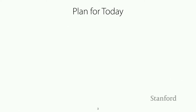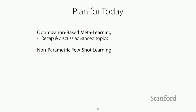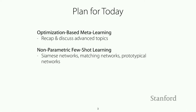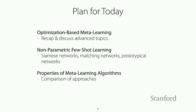So the plan for today: first we'll cover optimization-based meta-learning, basically recap what we covered last week very briefly and then discuss some more advanced topics. Then we'll cover non-parametric few-shot learning — this will probably be the bulk of the lecture — including things like Siamese networks, matching networks, and prototypical networks, as well as some other hybrid approaches. And lastly, we'll be covering properties of meta-learning algorithms and how we can think about comparing the classes of approaches we've seen so far.